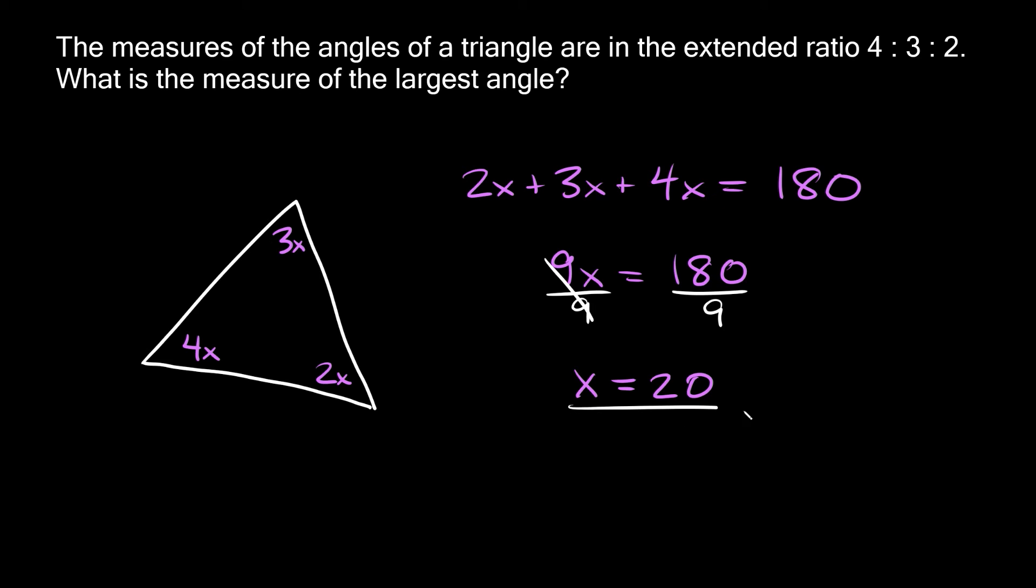Okay, so now that we know what x equals, what was the question? It says, what is the measure of the largest angle? Well, the largest angle would be this one that we labeled as 4x. So if we plug in 20 for x, 4 times 20 is going to equal 80. So this angle is equal to 80 degrees. Boom!